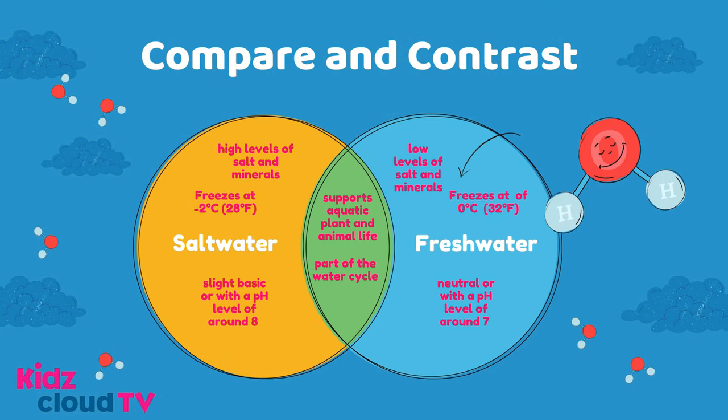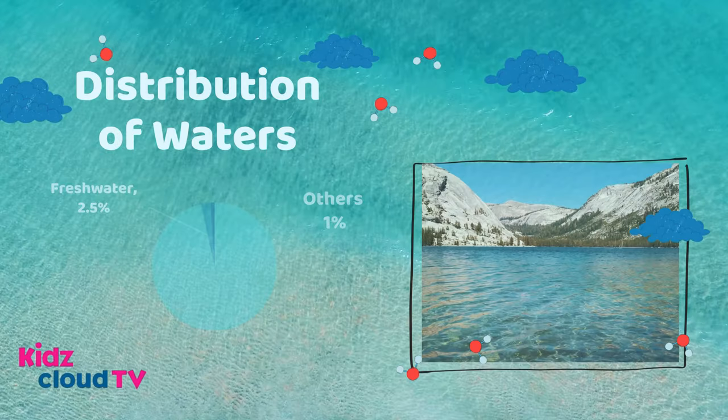Salt water is slightly basic, with a pH level of around 8. Fresh water is neutral, with a pH level of around 7. Salt water freezes at 2 degrees Celsius, or 28 degrees Fahrenheit. Fresh water freezes at 0 degrees Celsius, or 32 degrees Fahrenheit. Also, salt water has high levels of salt and minerals, and fresh water has low levels of salt and minerals.